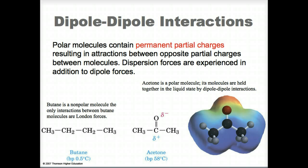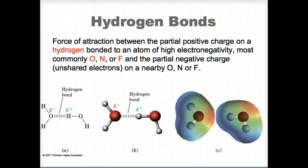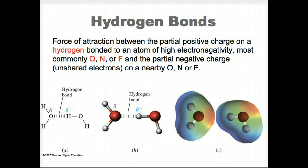Dipole-dipole interactions are attractive forces that are, on average, ten times as strong as London dispersion forces. A hydrogen bond is an electrostatic attraction between an atom bearing a partial positive charge in one molecule and an atom bearing a partial negative charge in a neighboring molecule. The hydrogen atom must be bonded to either an oxygen, nitrogen, or fluorine atom. Hydrogen bonds are typically only about one-fifteenth as strong as covalent bonds, yet they are on average ten times stronger than the average dipole-dipole interaction.